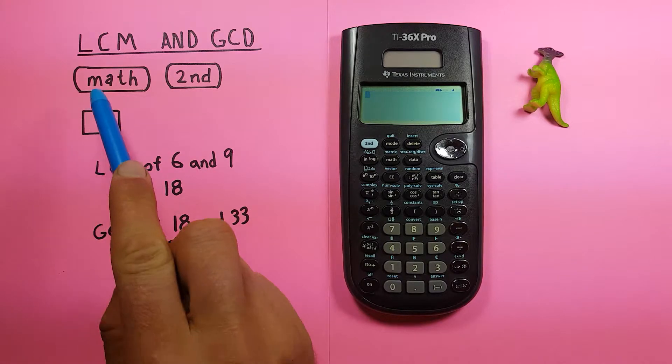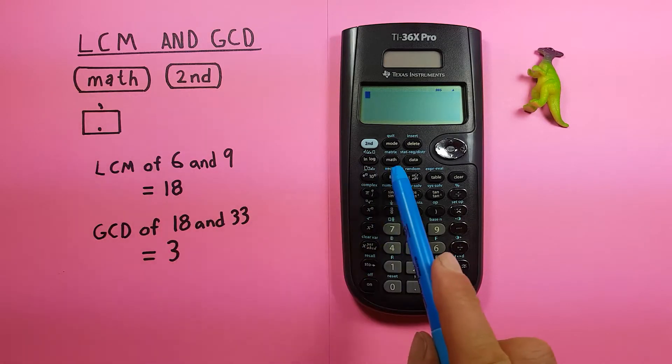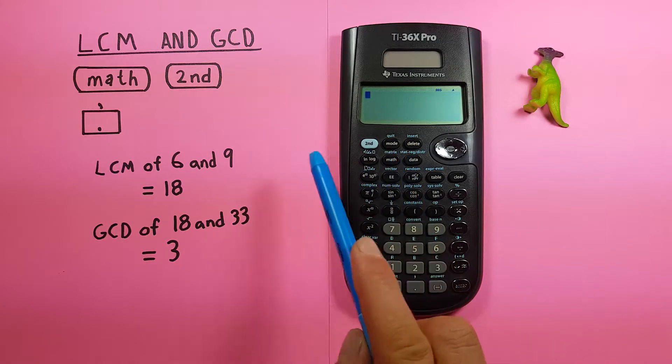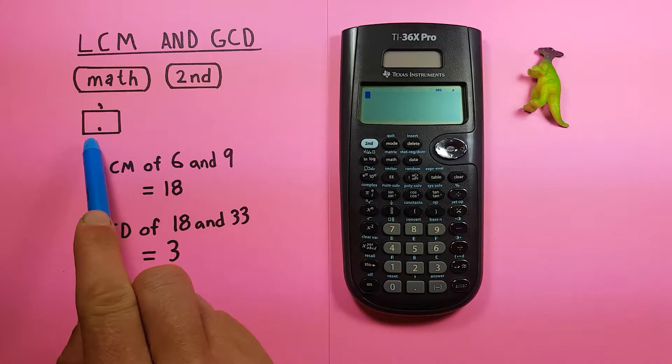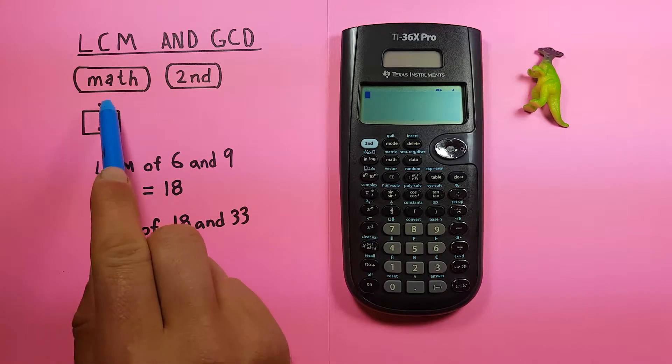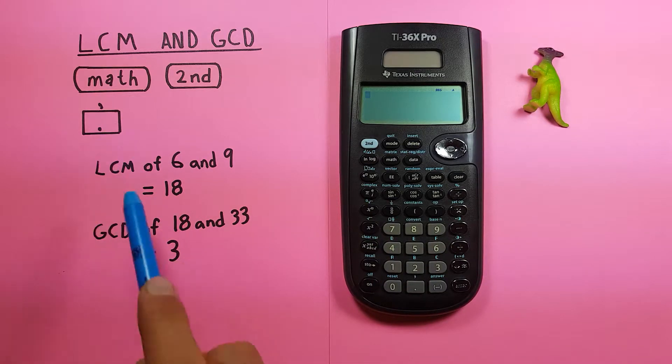To do this we'll be using the math key located here, as well as the second function key here in the top left, and the decimal key with the second function of the comma, all the way down here in the middle at the bottom.